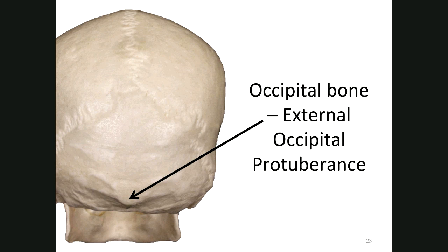Going back to the posterior view of the skull, there's a little bump on the back of your head — that's the external occipital protuberance. 'Occipital' tells you which bone it's on; 'protuberance' tells you it's a projection off the bone; 'external' tells you it's on the outside of the skull — because there is also an internal occipital protuberance on the inside. Protuberances and processes are sites for ligament and muscle attachments.